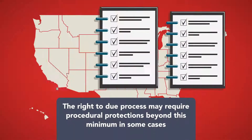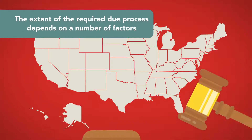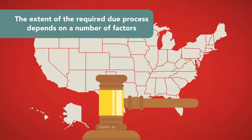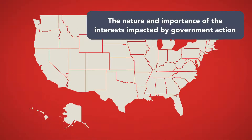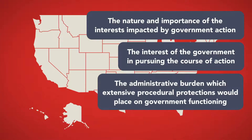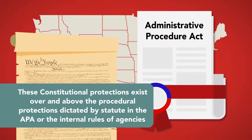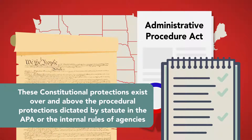The right to due process may require procedural protections beyond this minimum in some cases. The extent of the required due process depends on a number of factors, including the nature and importance of the interests impacted by government action, the interest of the government in pursuing the course of action, and the administrative burden which extensive procedural protections would place on government functioning. These constitutional protections exist over and above the procedural protections dictated by statute in the APA or the internal rules of agencies.